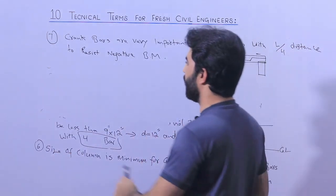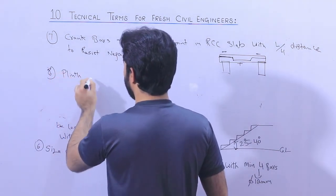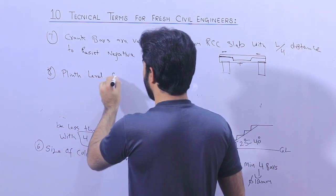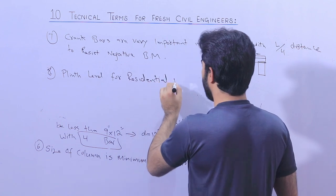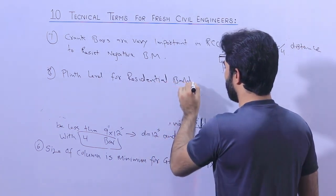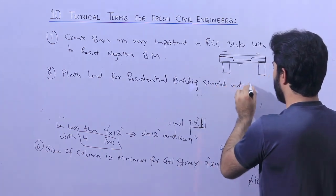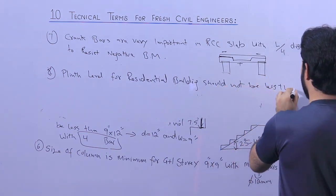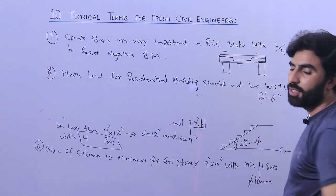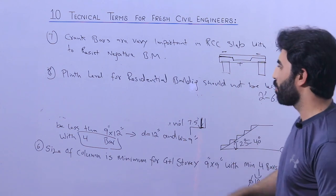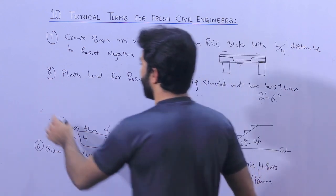The eighth term is the plinth level for a residential building. The plinth level should not be less than 2 feet 6 inches from the road level. If it is less than this, it will create more problems during flood conditions or when road water levels rise.